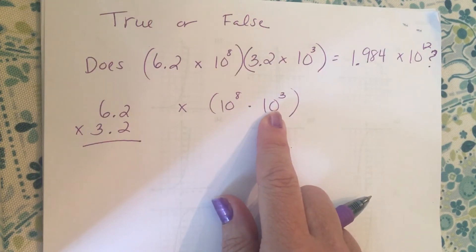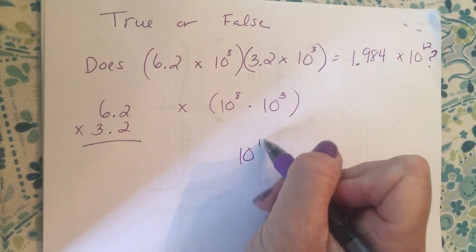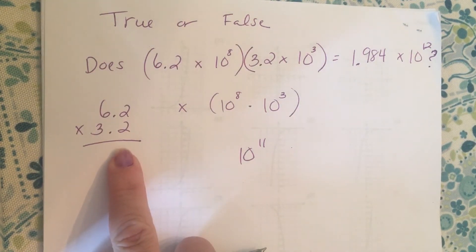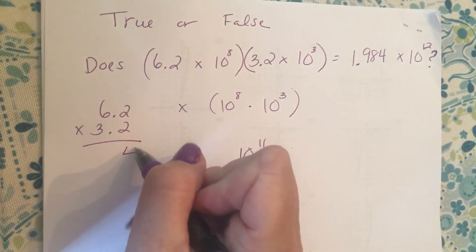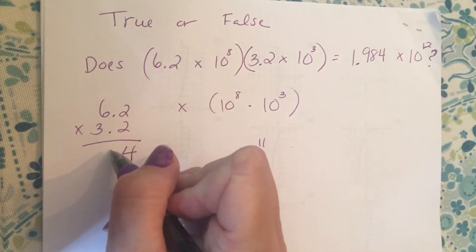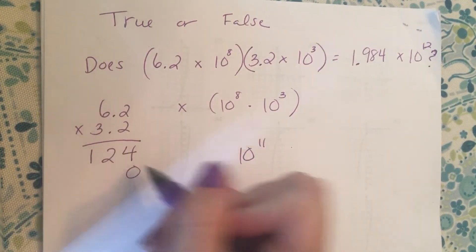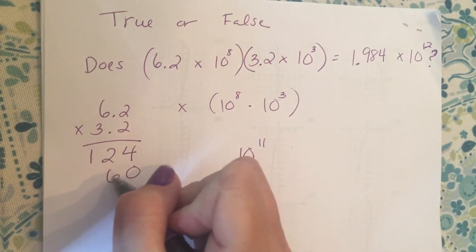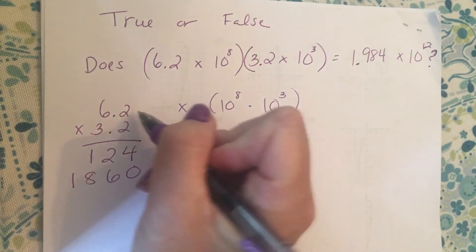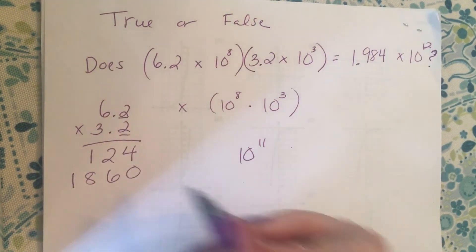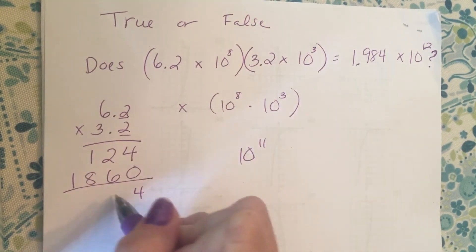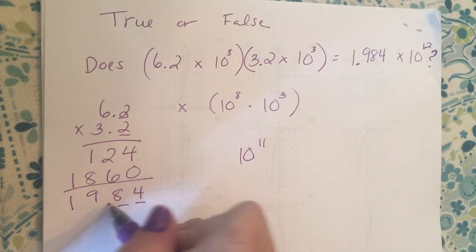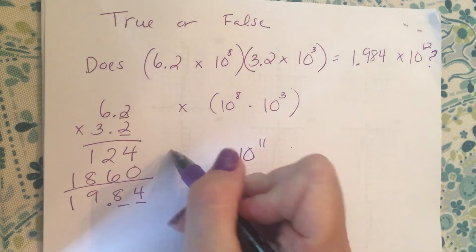Because this means ten multiplied eight times, and this is ten multiplied three times, so together that's ten multiplied eleven times. And then this is a nice review of multiplying with decimals. Two times two is four, six times two is twelve, placeholder since we're moving over one place value. Three times two is six, and three times six is eighteen. There's two digits behind the decimal in the problem, so after I add, there's going to be two digits behind the decimal in my answer.